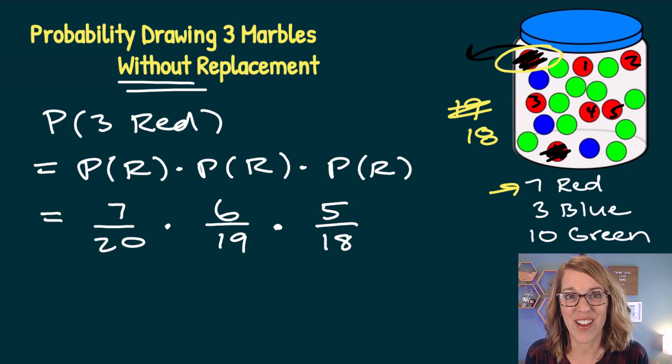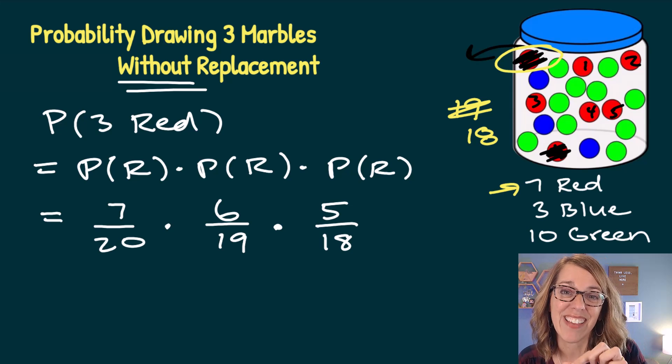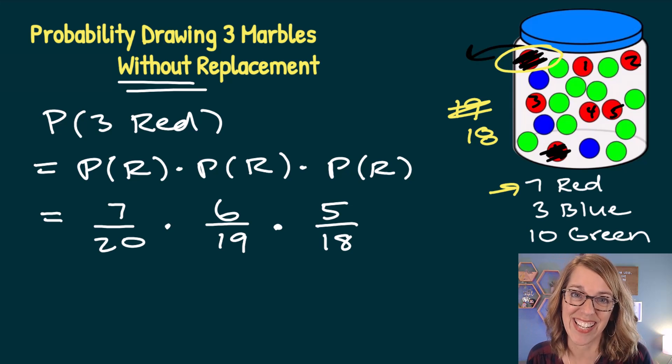Take a look at how this counts down. I start with a number of red, and I count down seven, six, five. In my denominator, I start with a number of marbles, 20, and then I count down 20, 19, and 18.